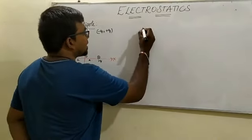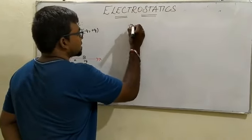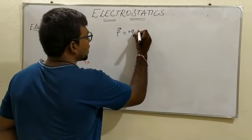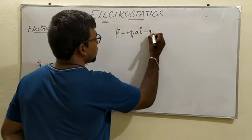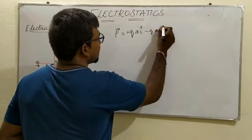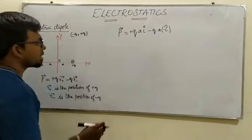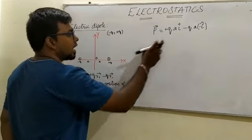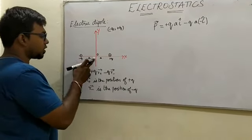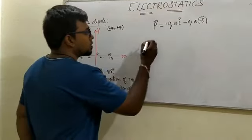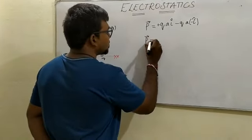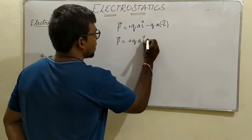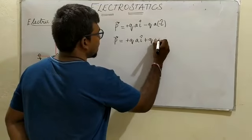So the electric dipole can be written as p-vector equals plus q·a·î minus q·(minus î), because plus q is towards the right of the origin on the x-axis and minus q is towards the left of the origin on the x-axis. So the electric dipole becomes p-vector equals plus q·a·î plus q·a·î.